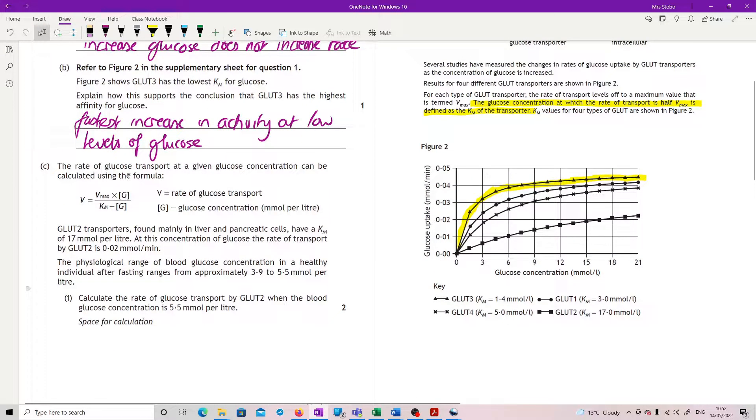In part C, the rate of glucose transport at a given glucose concentration can be calculated using this formula: Vmax times the concentration of glucose divided by Km plus the concentration of glucose. GLUT2 transporters, found mainly in liver and pancreatic cells, have a Km of 17 millimoles per liter. At this concentration of glucose, the rate of transport by GLUT2 is 0.02 millimoles per minute, not per liter.